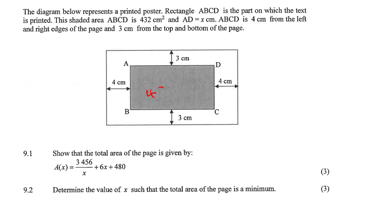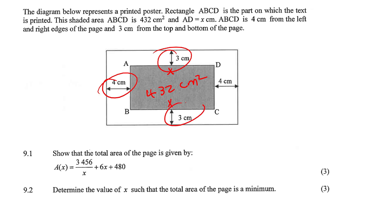So this shaded area is 432 square meters. And AD is X centimeters — AD is X. Well, that would mean this side is also X because it's a rectangle. And ABCD is 4 centimeters from the left and right — we can see that.